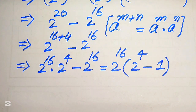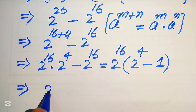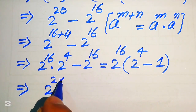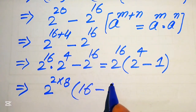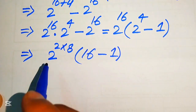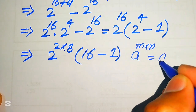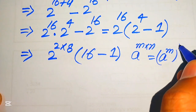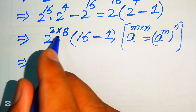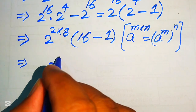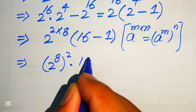In the next step, 2 to the power of 4 equals 16, and we rewrite 2 to the power of 16 by breaking the exponent 16 as 2 times 8. Applying the exponent law a to the power of m times n equals a to the power of m to the power of n, we move the exponent 8 inside, giving us 2 to the power of 8 whole squared, multiplied by 16 minus 1, which is 15.